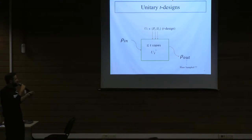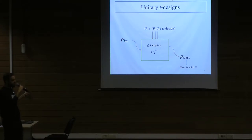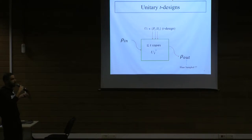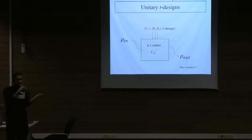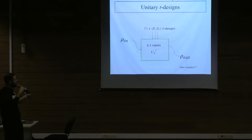Here is an intuitive picture of what a T-design does. You input your state for a given application and apply to it a unitary sampled from a T-design. You are allowed to use up to T copies. The output state you obtain with the T-design acting on it is basically indistinguishable in practice from a Haar-sampled one. The main interest of these things is that they can be done efficiently in polynomial time, whereas genuine Haar randomness cannot.